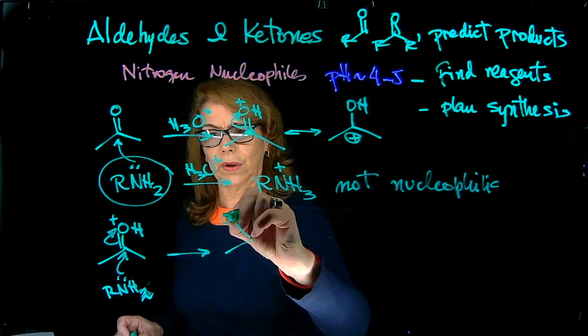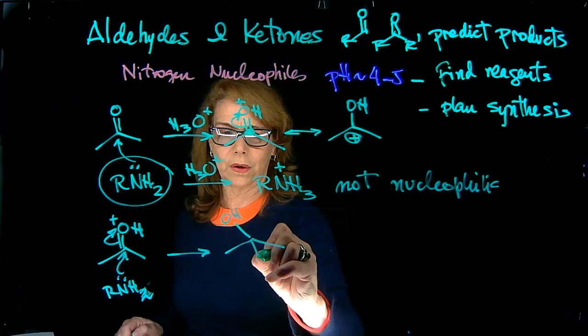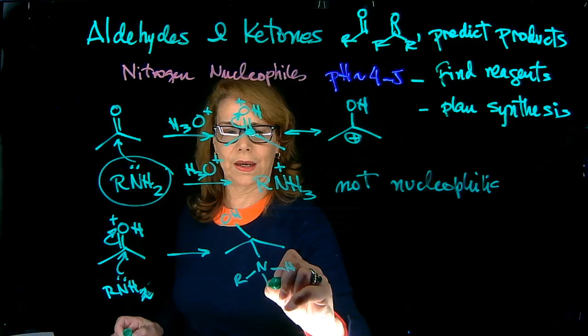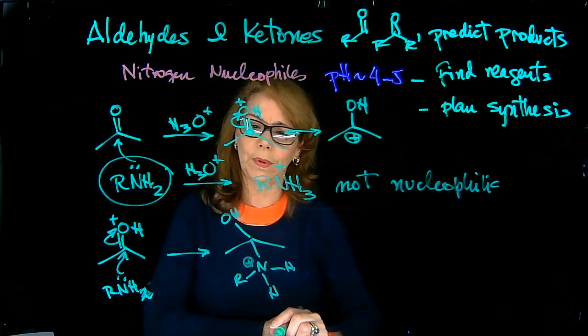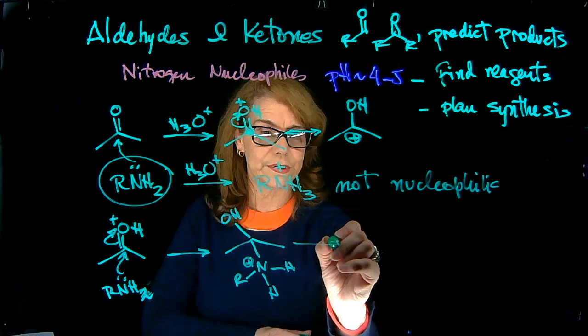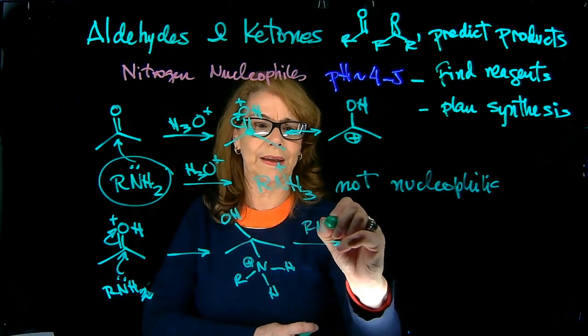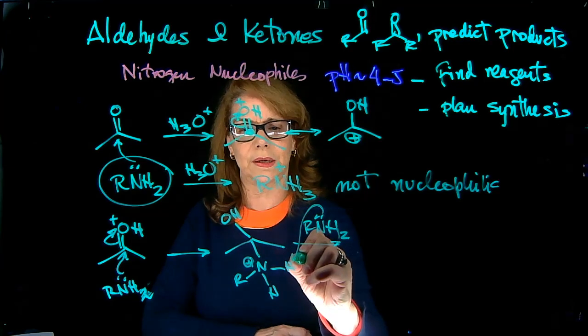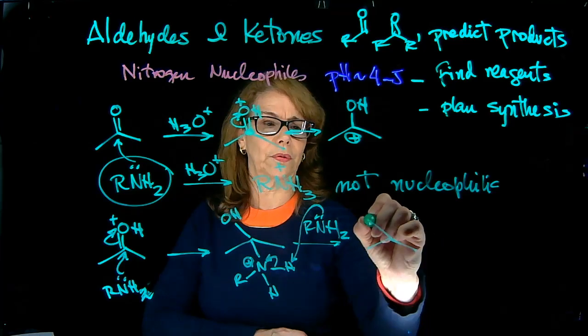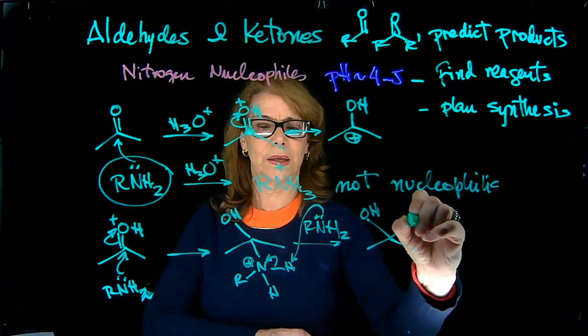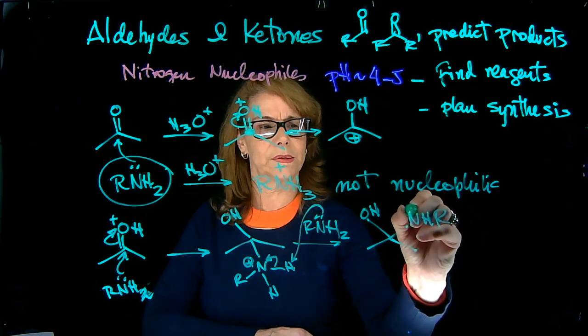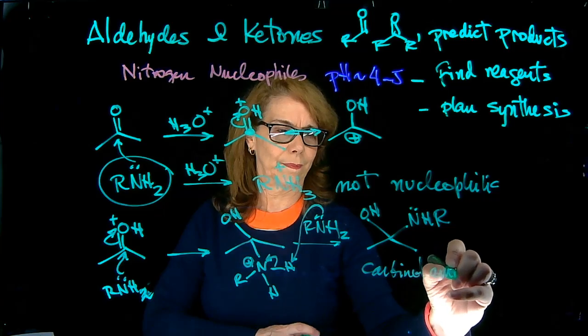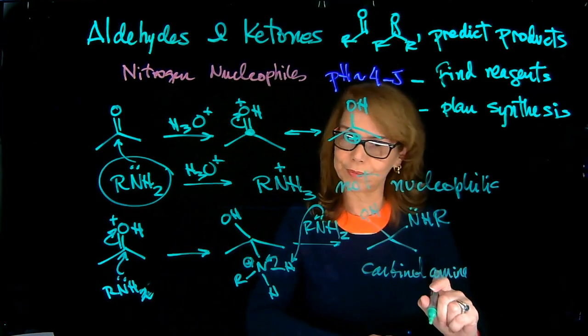So if we go from here in a nucleophilic attack, I will have here OH, and then I'm going to have here N-R, N-H+. That is a formal positive charge. So we need a proton transfer first step. So the same amine can act, here is acting as nucleophile, but we can have it acting as base to remove that H. We have now an intermediate that has OH, and that is called a carbinolamine. So we have the OH and the amino group, carbinolamine.